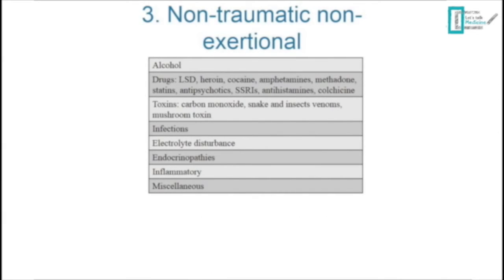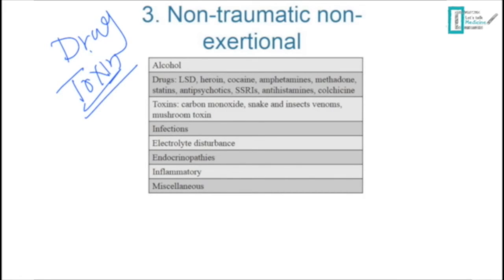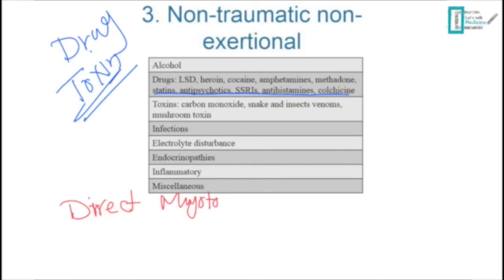The non-traumatic non-exertional class of causes is primarily drugs and toxins — including prescription drugs like statins, antipsychotics, antihistamines, and colchicine. CNS depressants such as excessive alcohol and opioid overdose cause coma, which leads to immobilization and then rhabdomyolysis. This is an important indirect mechanism of drug-induced rhabdomyolysis.